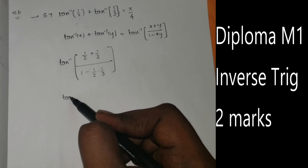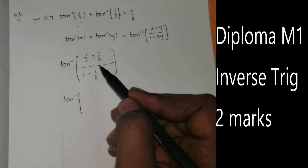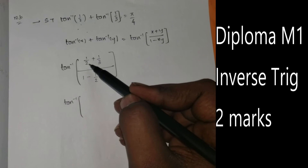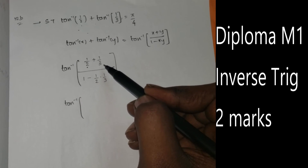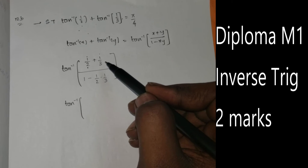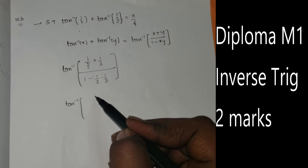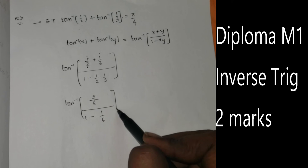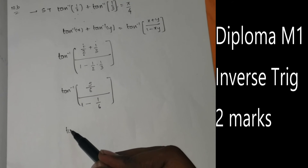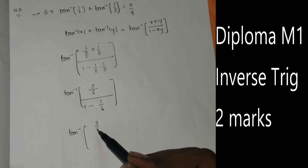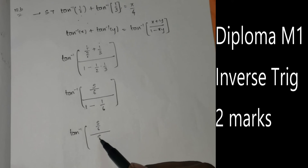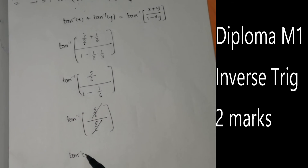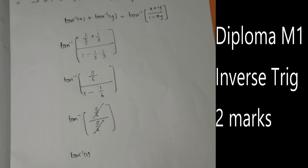Let's substitute tan⁻¹(1/2) plus tan⁻¹(1/3). We calculate x plus y by 1 minus xy. The numerator is 1/2 plus 1/3, which gives 5/6. The denominator is 1 minus (1/2)(1/3), giving 5/6. So 5/6 divided by 5/6 cancels to give tan⁻¹(1).